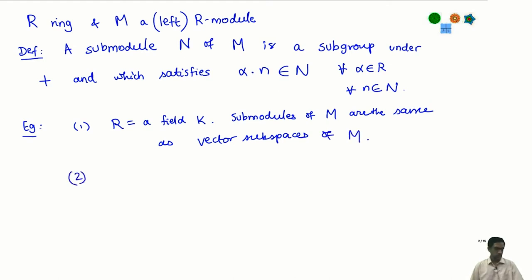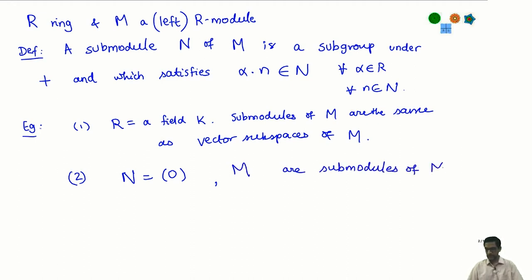There are some obvious sub-modules that always exist. Given any module M, we can construct two obvious sub-modules: the zero module and the entire module M. These are sometimes called the two trivial sub-modules — zero on one end and M on the other.